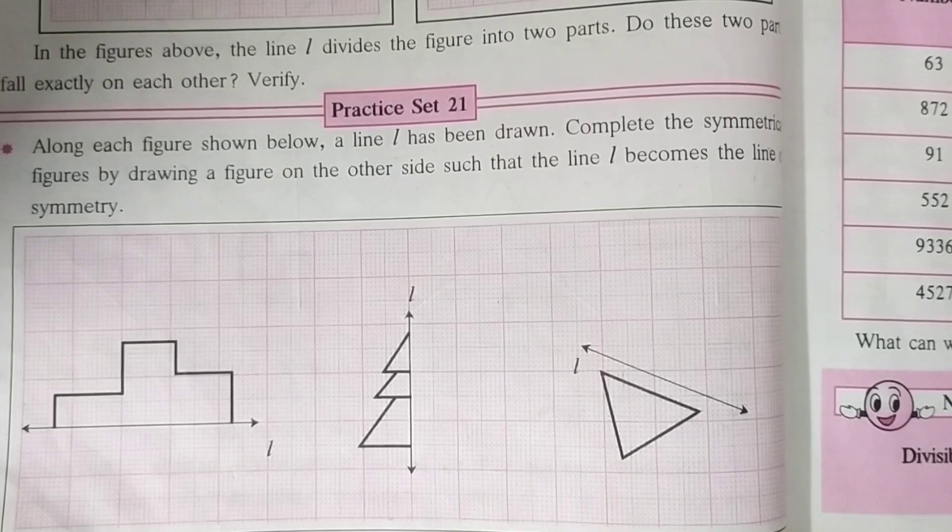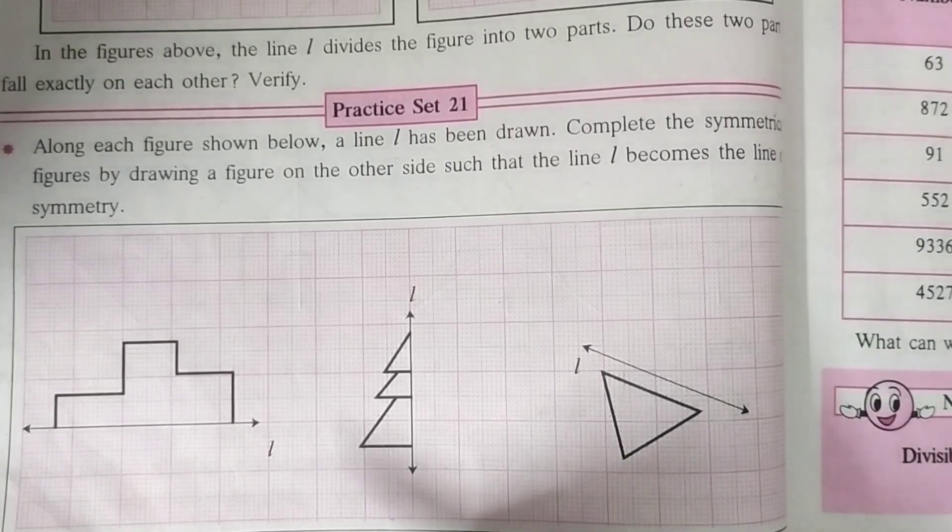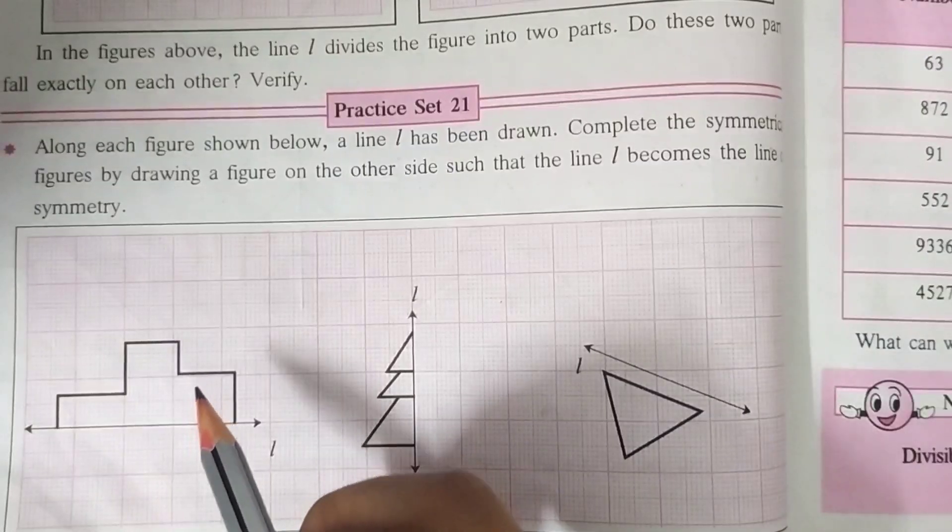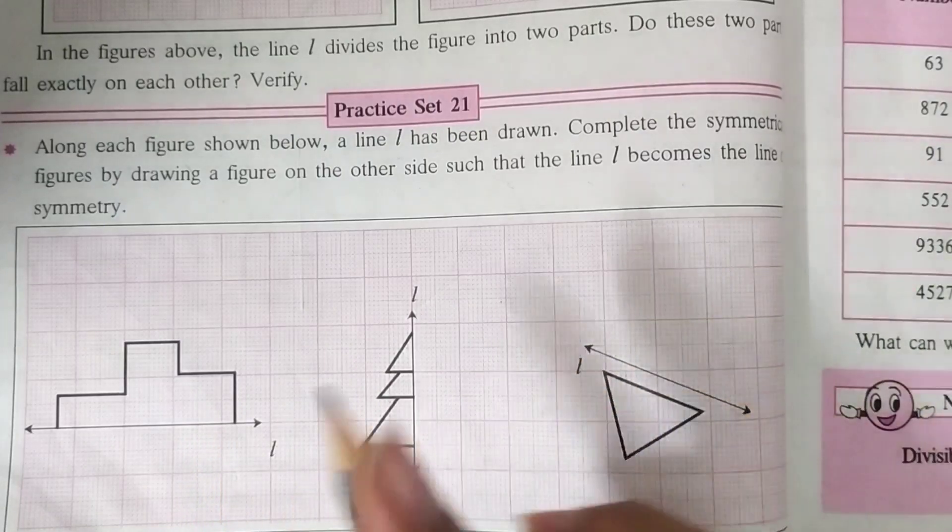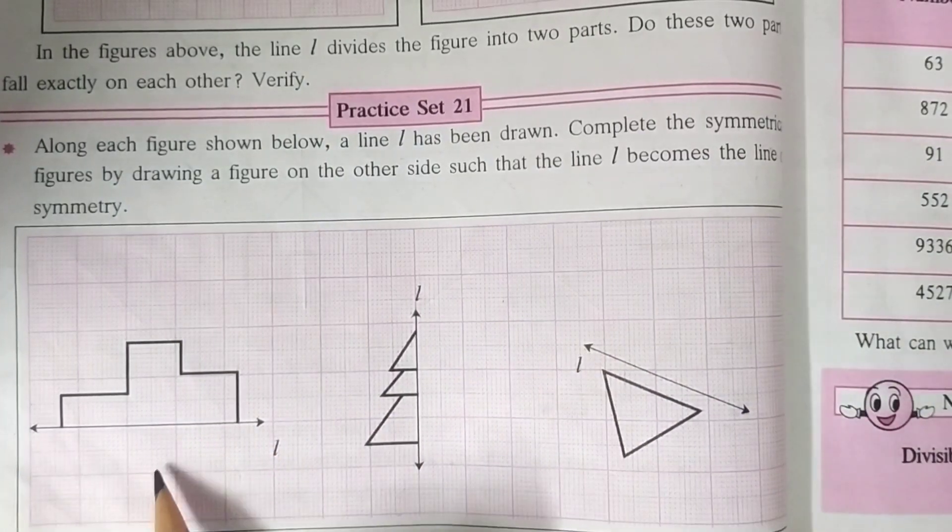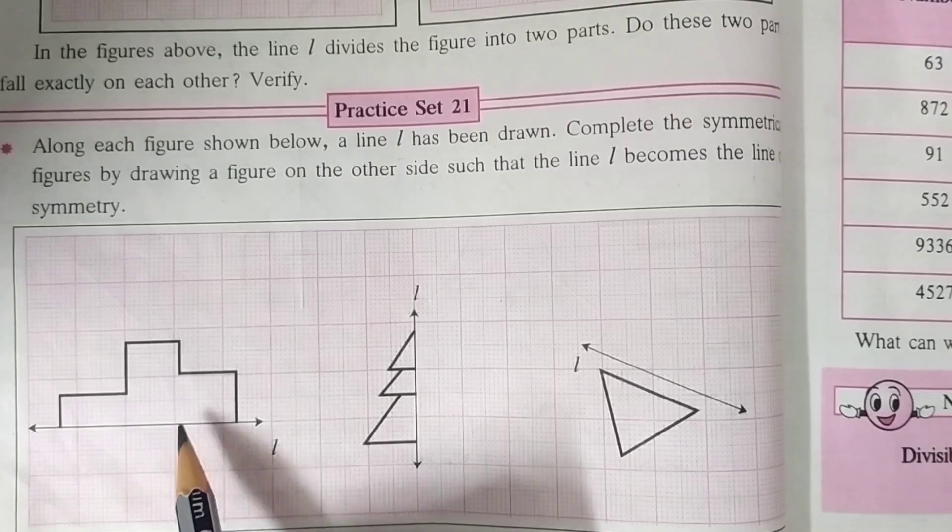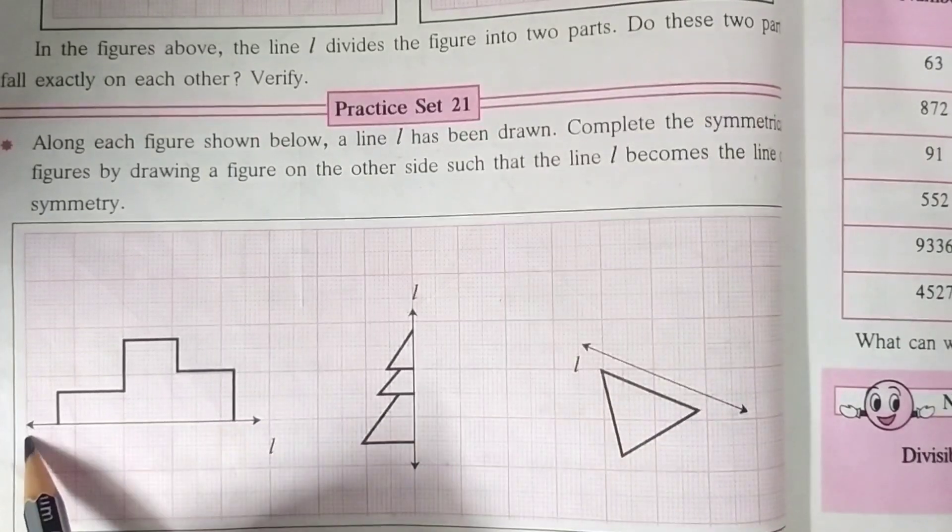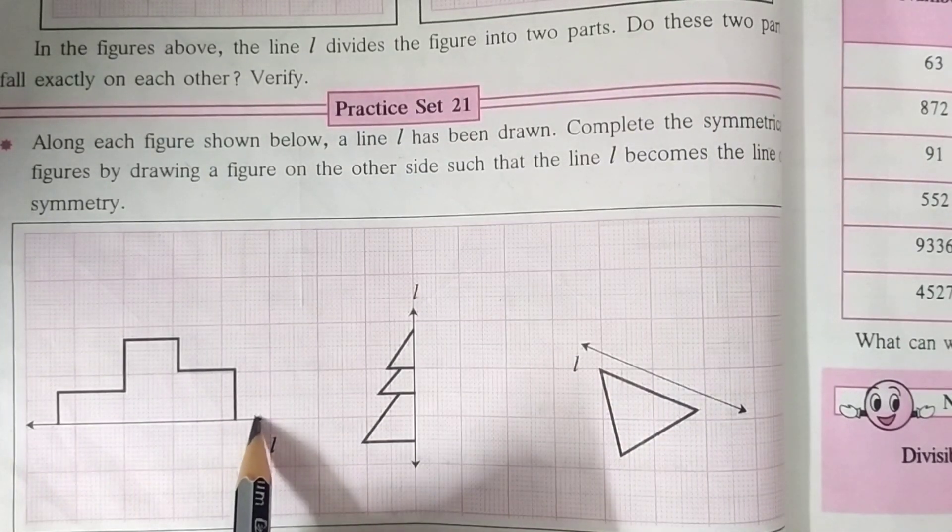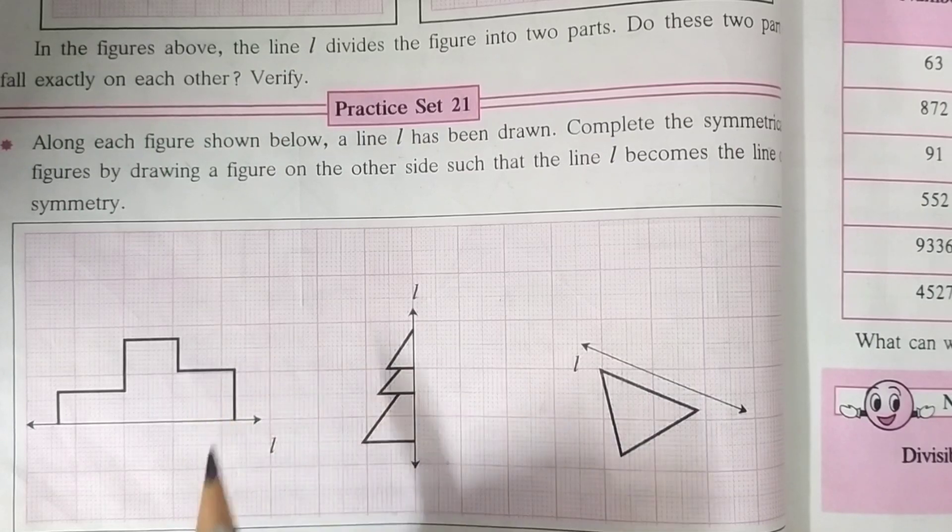So here we have to draw the symmetrical shapes of these figures on the other side of line L. In first figure, the figure is drawn on the upper side of line L. This is the line L, look, and the figure is on the upper side of line L.